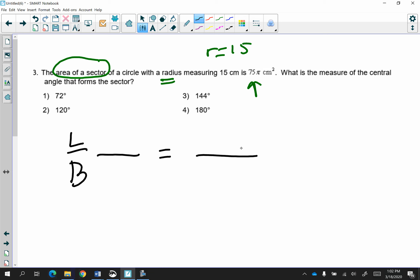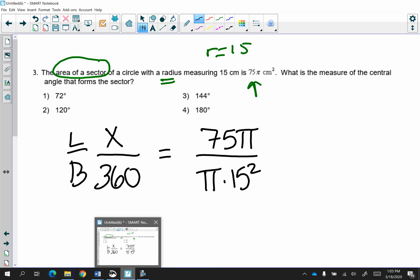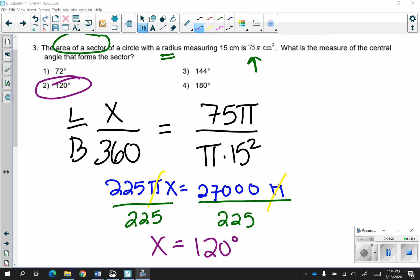So when I set up my little to big, do I know the measure of the angle? No, but the whole circle is 360 degrees. The little part, the shaded sector, is 75 pi, but the area of the whole circle is pi r squared, so pi times 15 squared. Take a moment to pause your computer, solve this problem, and then turn it on and see if you get the same answer that I got. I hope you got the same answer. Remember, you can always pause your computer at any time to stop and copy the work down.